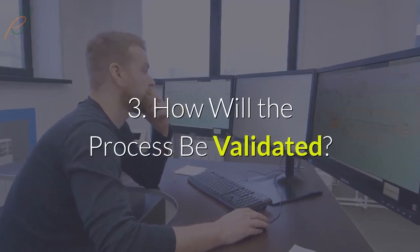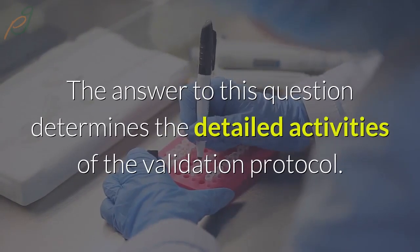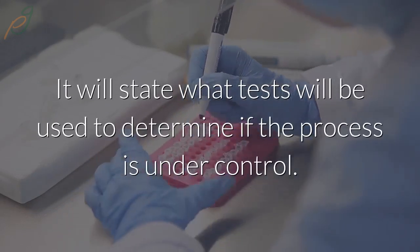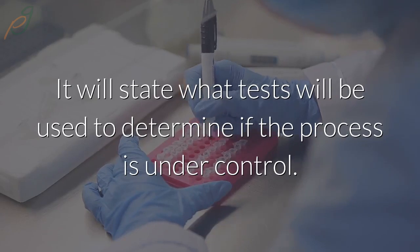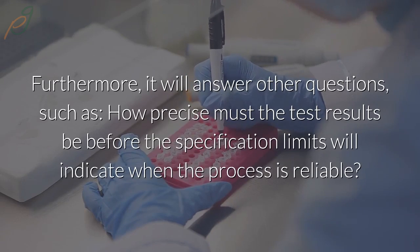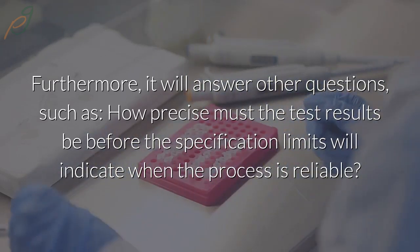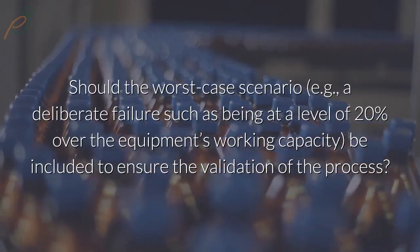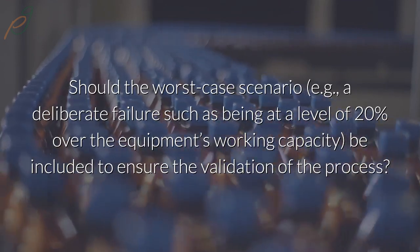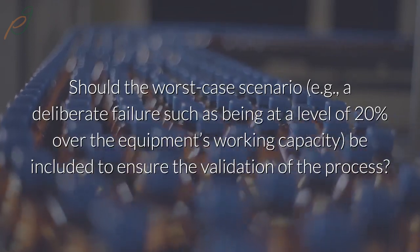Question three: how will the process be validated? The answer to this question determines the detailed activities of the validation protocol. It will state what tests will be used to determine if the process is under control. Furthermore, it will answer other questions such as: how precise must the test results be before the specification limits will indicate when the process is reliable? Should the worst-case scenario — for example, a deliberate failure such as being at a level of 20 percent over the equipment's working capacity — be included to ensure the validation of the process?